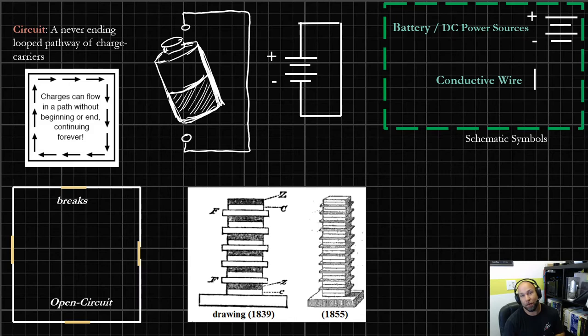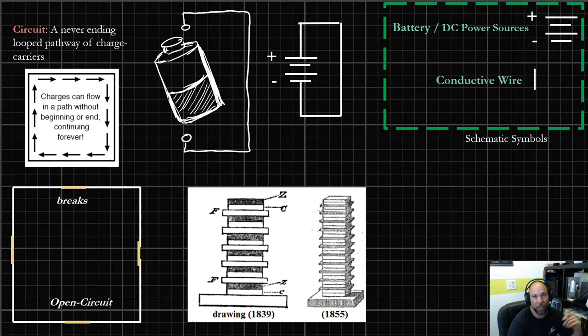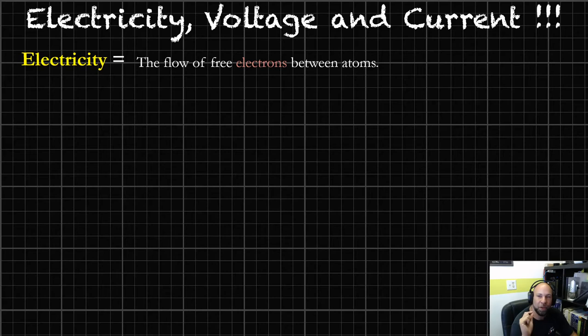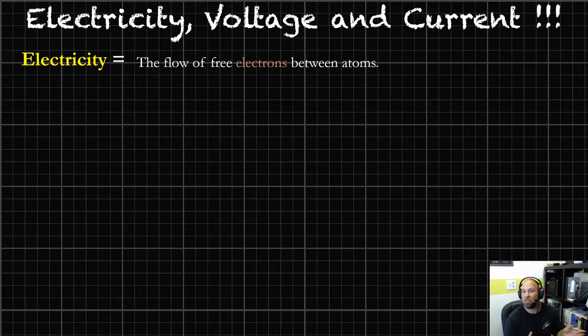So now we know what a circuit is — something with a source and destination with a completed path attached to it. All right, we finally did it. We got to a place where we can define electricity. Electricity is the free flow of electrons between atoms. Simple, right? We spent all this time talking about electrons, how some materials allow it and some don't, and now we have a definition. The flow of free electrons between atoms. That's what we're doing when we're manipulating electrical circuits — we're trying to force electrons to go in a specific direction or manipulate that flow.